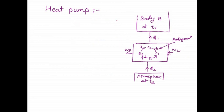The next device I am going to discuss is the heat pump. The working of the heat pump is similar to the refrigerator; the difference is only in the temperature arrangement. Here we consider a body B at higher temperature than the surrounding. The body is maintained at constant temperature T1, and the heat extracted from the lower temperature — the atmosphere — is discharged to the higher temperature of body B with expenditure of work W in a cyclic device.